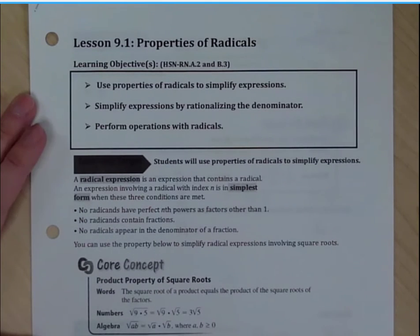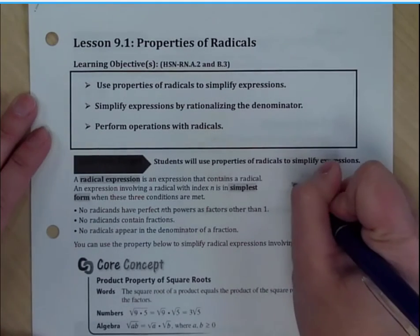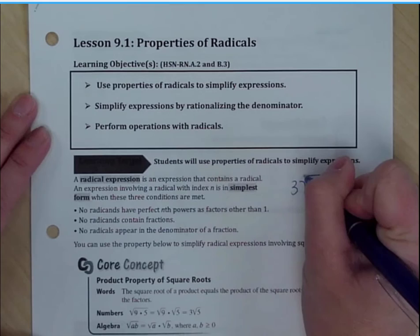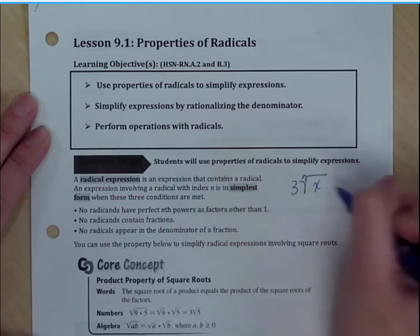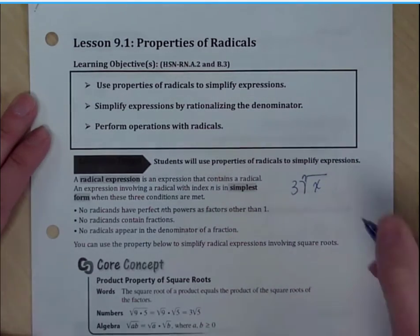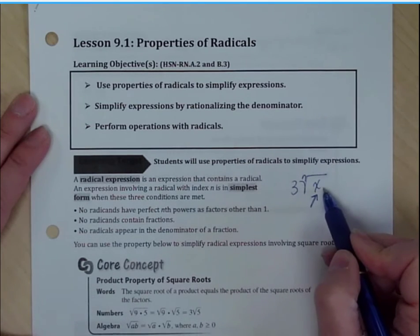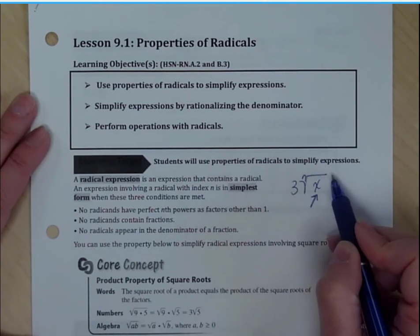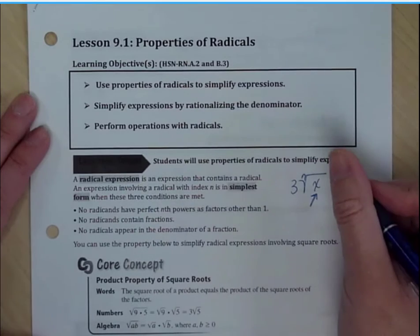Let's talk about the parts of a radical before we go ahead and get started. When we have a radical, it can come in different forms. So the whole thing is called a radical. The term inside the radical here is what we call the radicand.